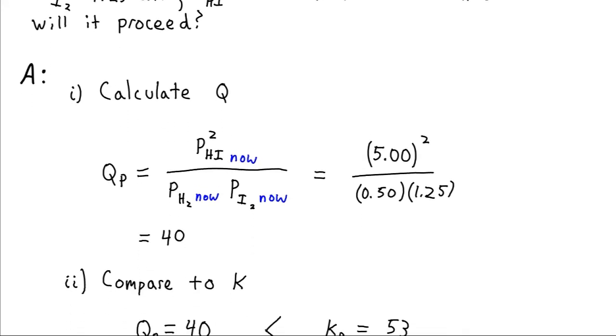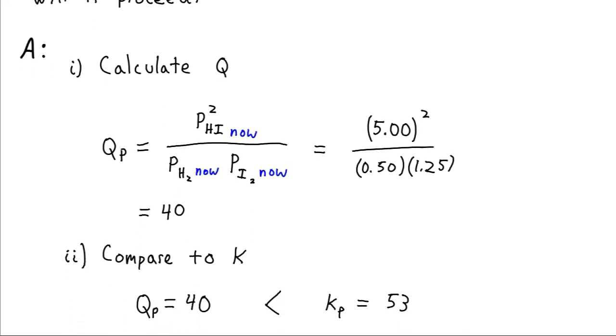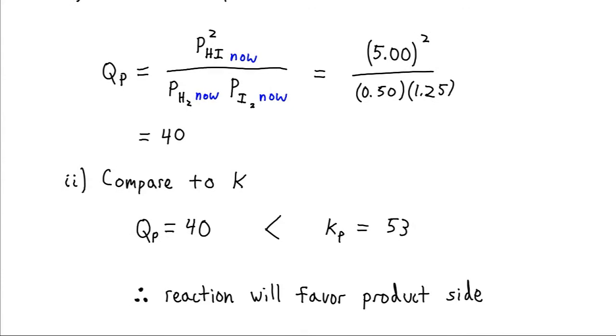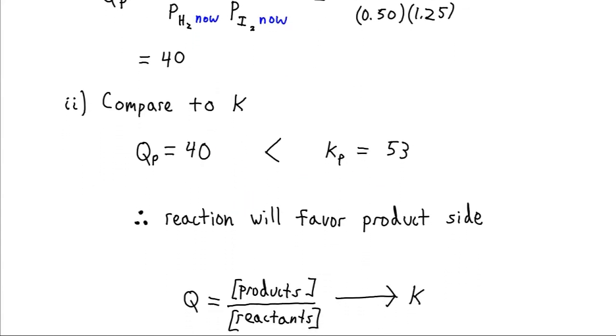All right, well now we just have to compare this to our equilibrium constant. So our equilibrium constant has a value of 53. So that must mean that we are going to need to produce more products, because we need for this number to go up to approach the 53 value. And so that means we need to generate more of these products in the numerator, and or decrease the amount of reactants in the denominator.